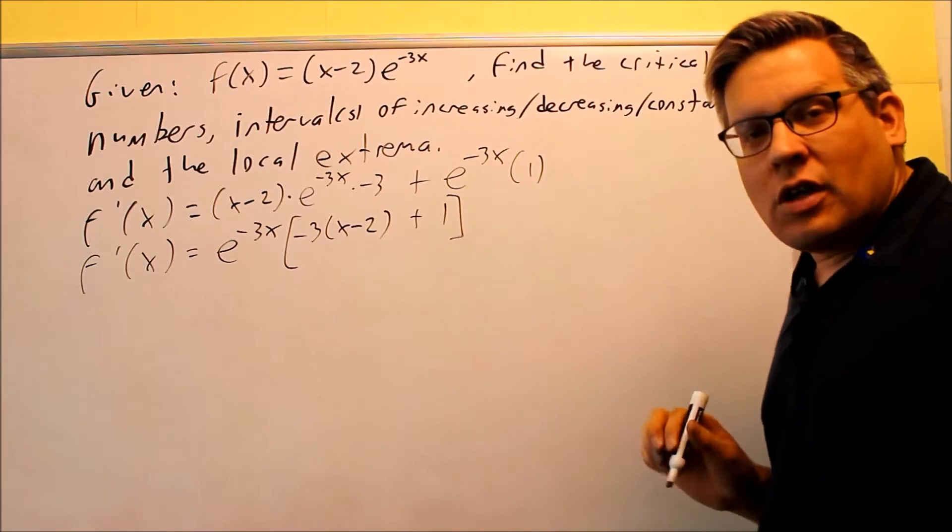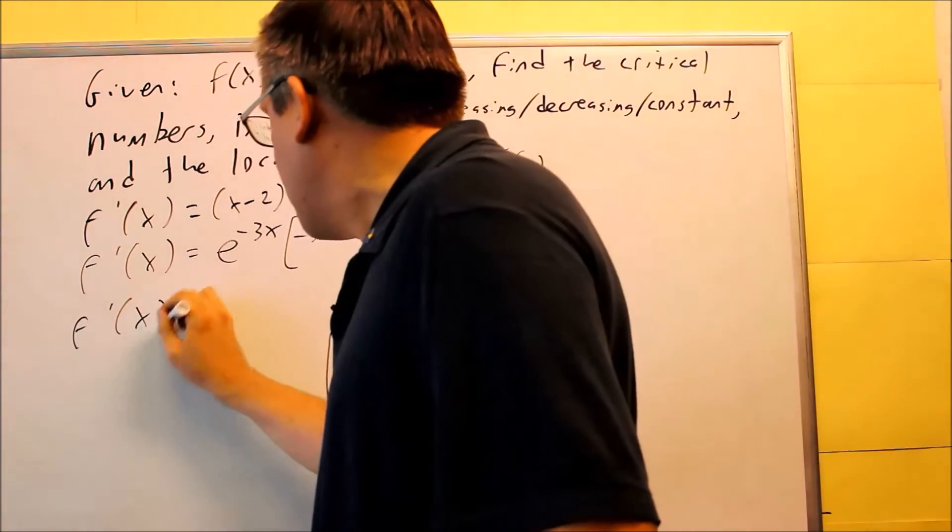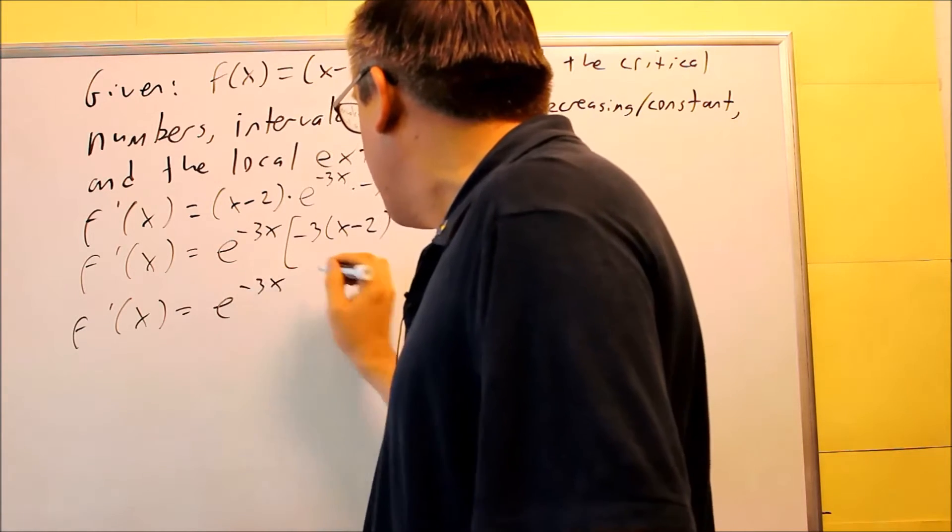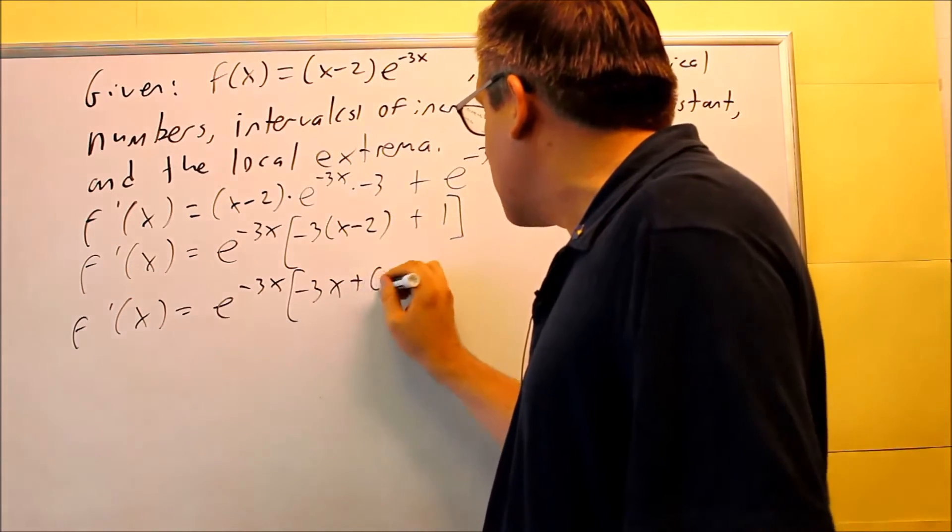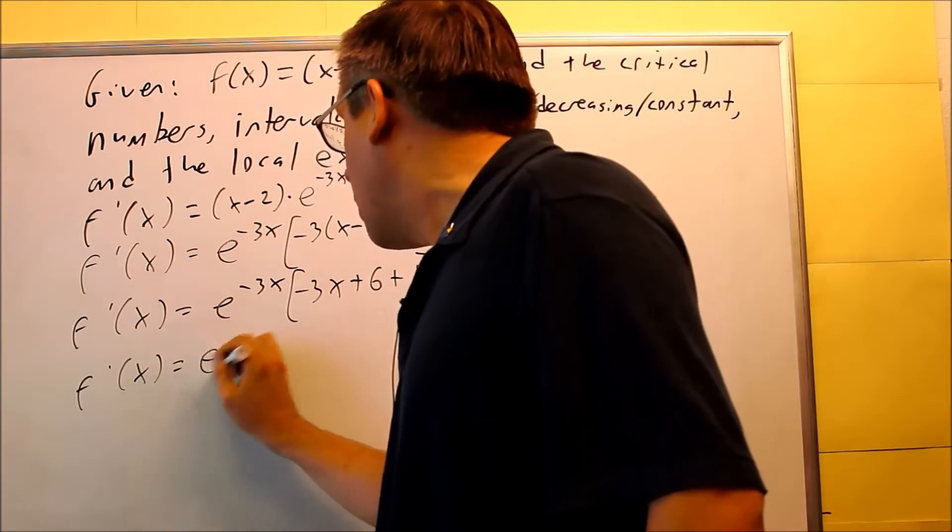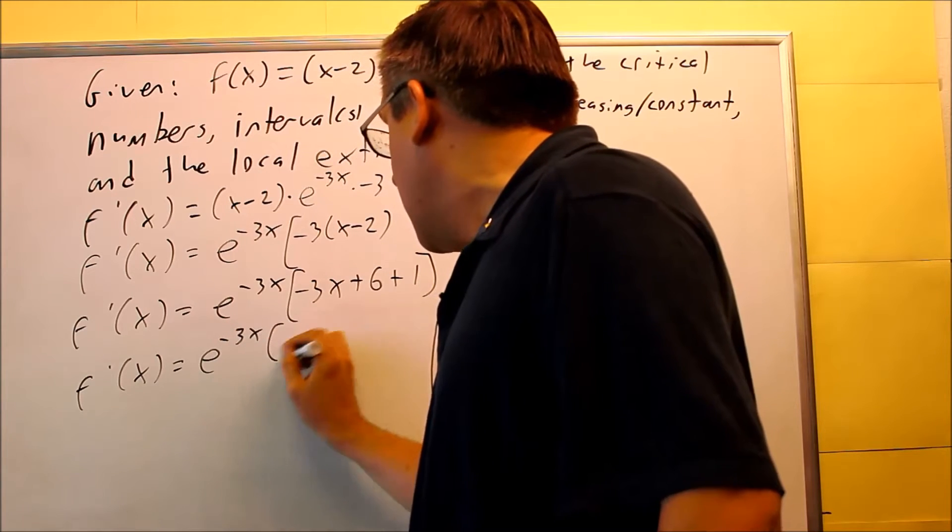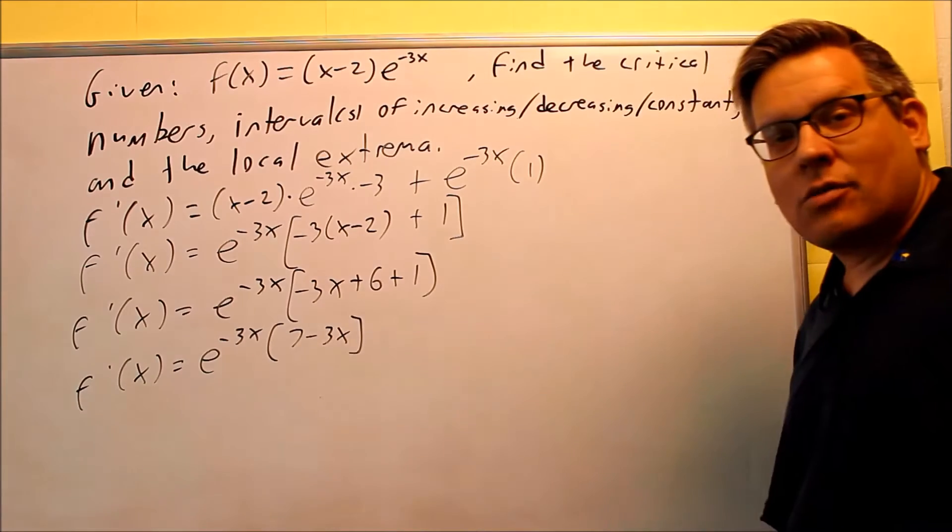So this is going to be what we have left on the inside. And this part we can simplify. When we do that, we can multiply that out. Negative 3x plus 6 plus 1. And then that can be simplified one more time. And I get 7 minus 3x left on the inside there.